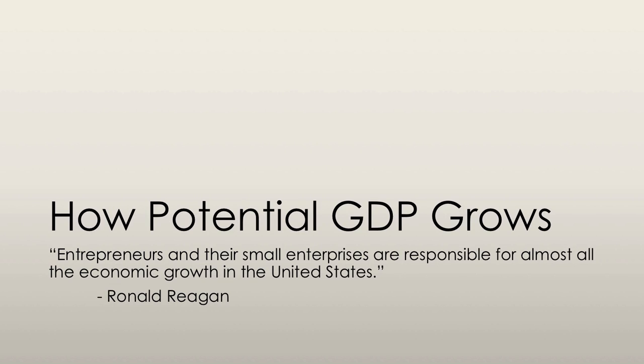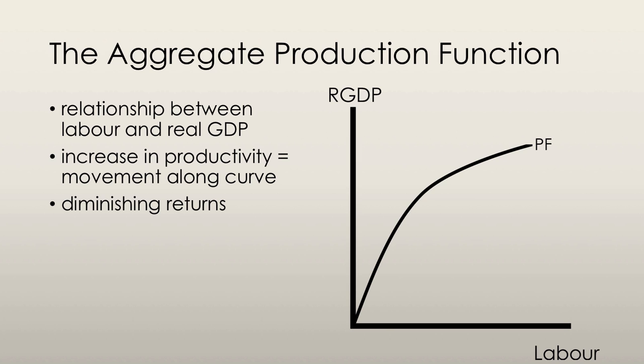Let's run through how potential GDP grows. The aggregate production function is the relationship between labor and real GDP. Land, labor, capital, and entrepreneurship actually produce real GDP, and the productivity of these factors is what determines the quantity of real GDP.